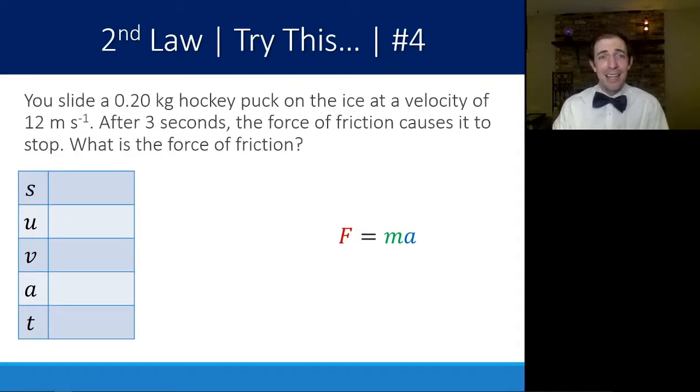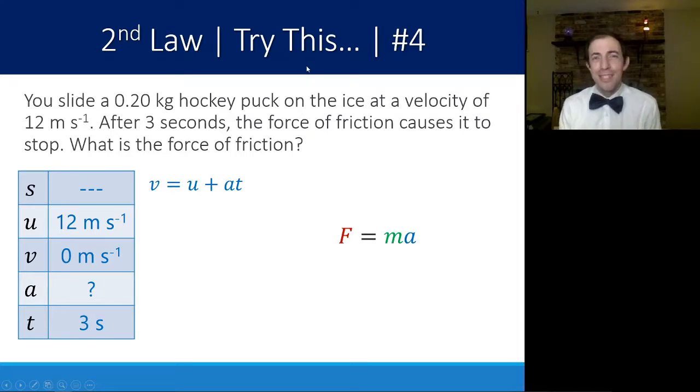Here's another example. You slide a 0.2 kilogram hockey puck on the ice at a velocity of 12 meters per second. After three seconds, the force of friction causes it to stop. What is the force of friction? Here, I know the initial velocity, I know the time, and I know that the final velocity must be zero. So plugging those numbers in here, and trying to find acceleration so that I can ultimately find the force, I know that I won't need displacement. That narrows it down to this equation here. Using this equation and F equals ma, I'd like you to calculate all the way through to find the force of friction.